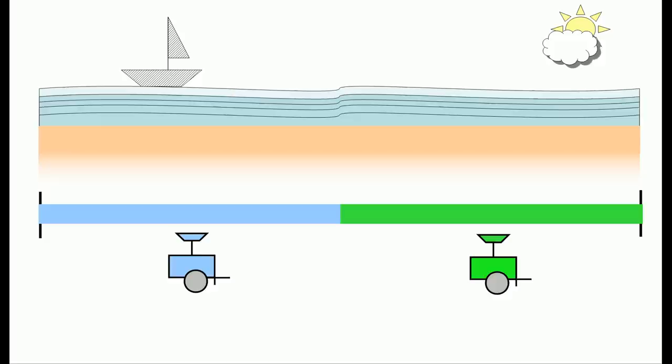However, each stand wants to locate to be closer to more customers. So the green stand thinks, what happens if I move closer to the blue stand?